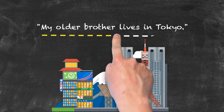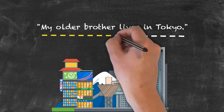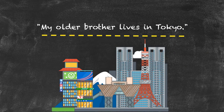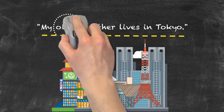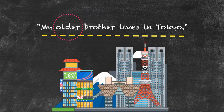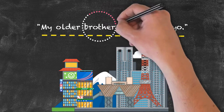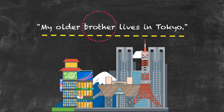Let's think about the words within this particular sentence. We have 'my,' indicating whose brother it is. We have 'older,' indicating which brother it is. The word 'brother' indicates the person in the sentence that is doing the action.